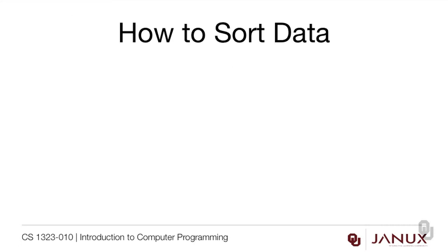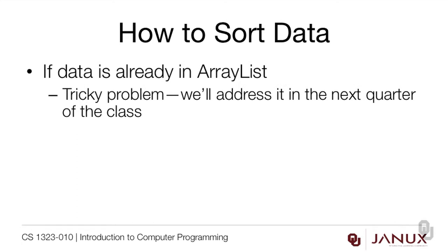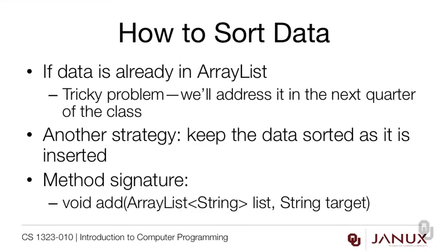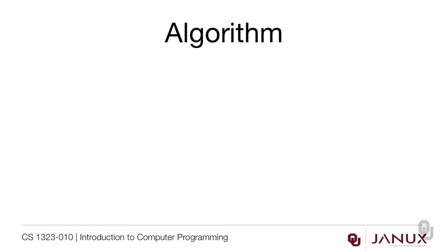So the question then becomes: how do we sort data? Well, if the data's already in an array list, this is kind of a tricky problem. We're going to address it in the next quarter of the class once we have nested loops available. But there's another strategy we can do now, and that is to insert the data in such a way that it remains sorted while it's being inserted - and that's something that's within our grasp at this point. The method signature for this will be void add, ArrayList of String list, so we're adding to an ArrayList of strings our target string.